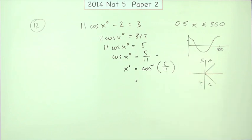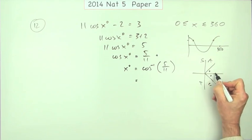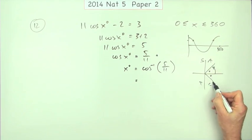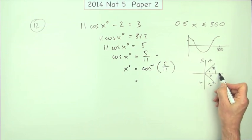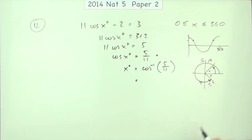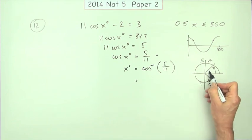That's what this analogue diagram, the CAST diagram shows you. The acute angle would go in here but the actual angles are the amounts round from the horizontal anti-clockwise. That's your first answer. Way all the way round is your second answer.